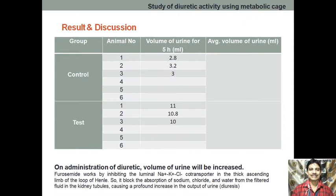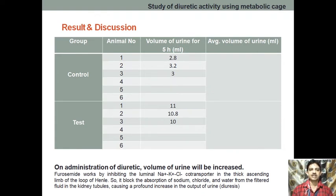In this video, we are going to see the result and discussion for the experiment study of diuretic activity using metabolic cages. We have already performed the experiment, and the volume of urine collected over 5 hours is 2.8 ml, 3.2 ml, and 3 ml in the control group.